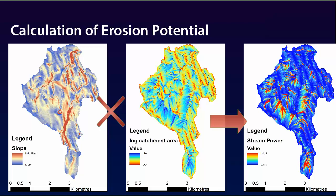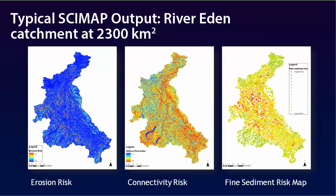These calculations give us a map of erosion potential across the landscape. This slide shows a typical output set from CIMAP, in this case for the River Eden catchment in Cumbria. The map on the left shows the point scale erosion risk. The map in the centre shows the connectivity risk. And once these two maps have been combined, the map on the far right shows the fine sediment risk in the channels. Areas highlighted in red show where there is greater risk than there is water to dilute that risk, and areas in green show where there is more dilution than risk accumulating through the landscape.